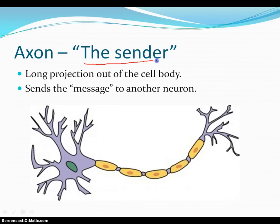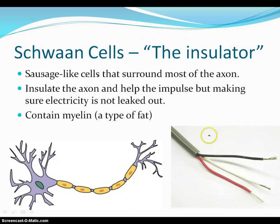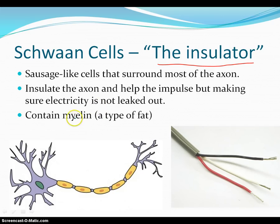The axon — you can think of this as the sender. This whole region right here is called the axon. It is a long projection out of the cell body, and this is where a nerve impulse is going to be sent through and continue on to wherever it needs to go. Schwann cells — you can think of those as little insulators. They are little sausage-like cells that surround most of the axon, insulating it and helping the impulse by making sure electricity is not leaked out.